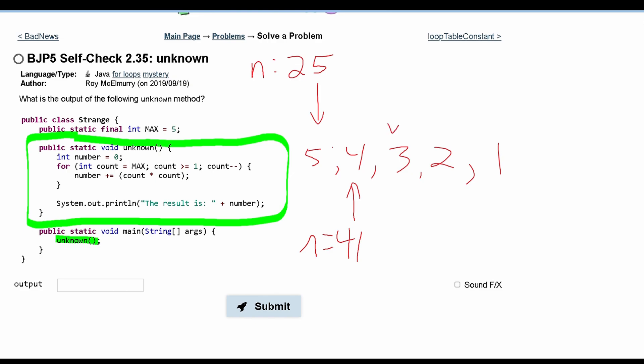Next, we go through our for loop again. We're in our third iteration. And we have to run this as count times count. Count is now 3, so we have 9 plus n. n being 41, we get that now n is equal to 50.